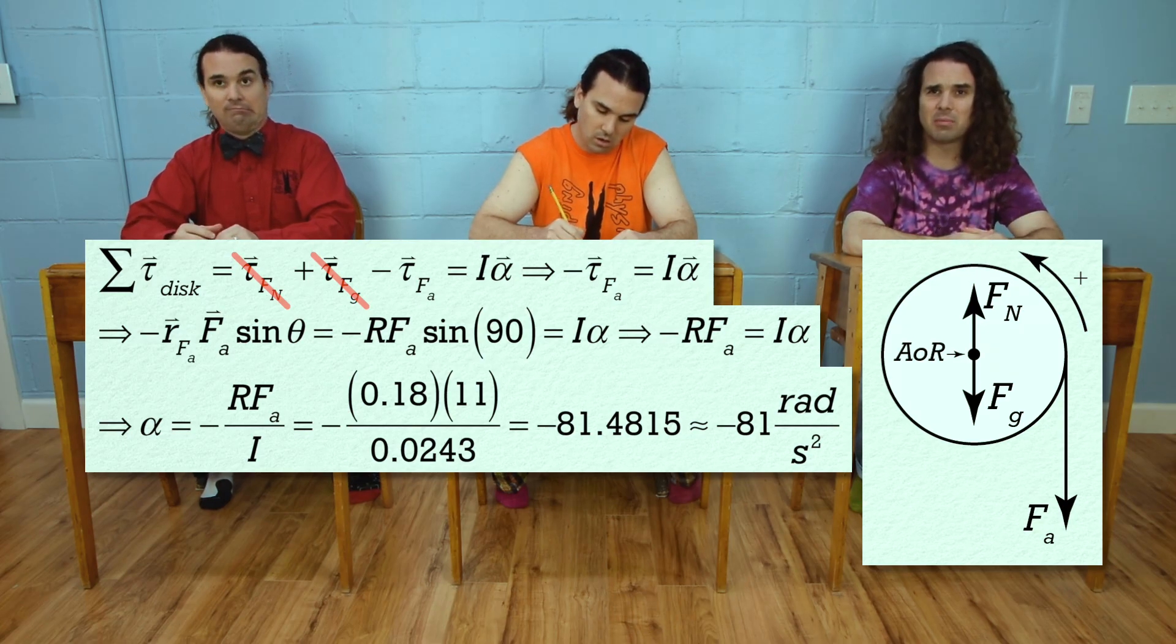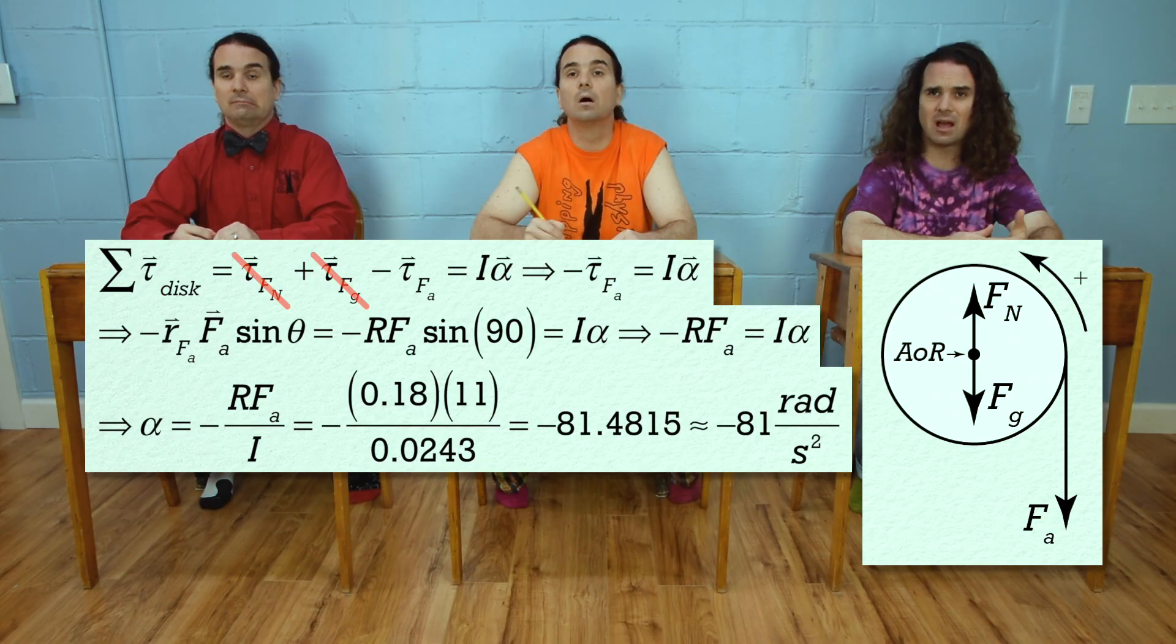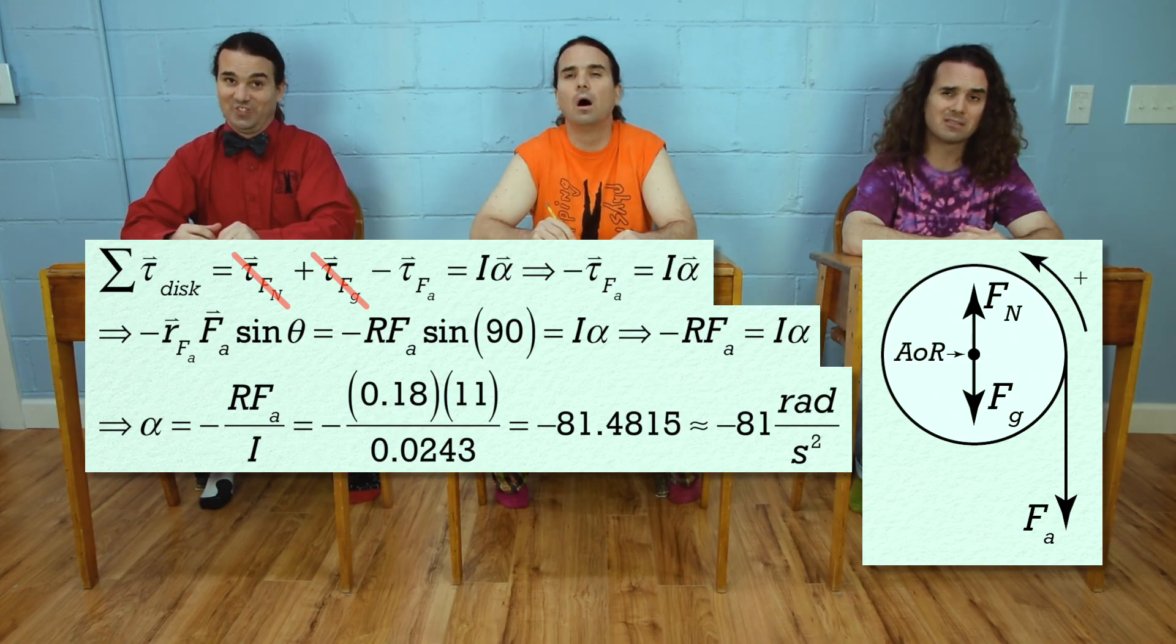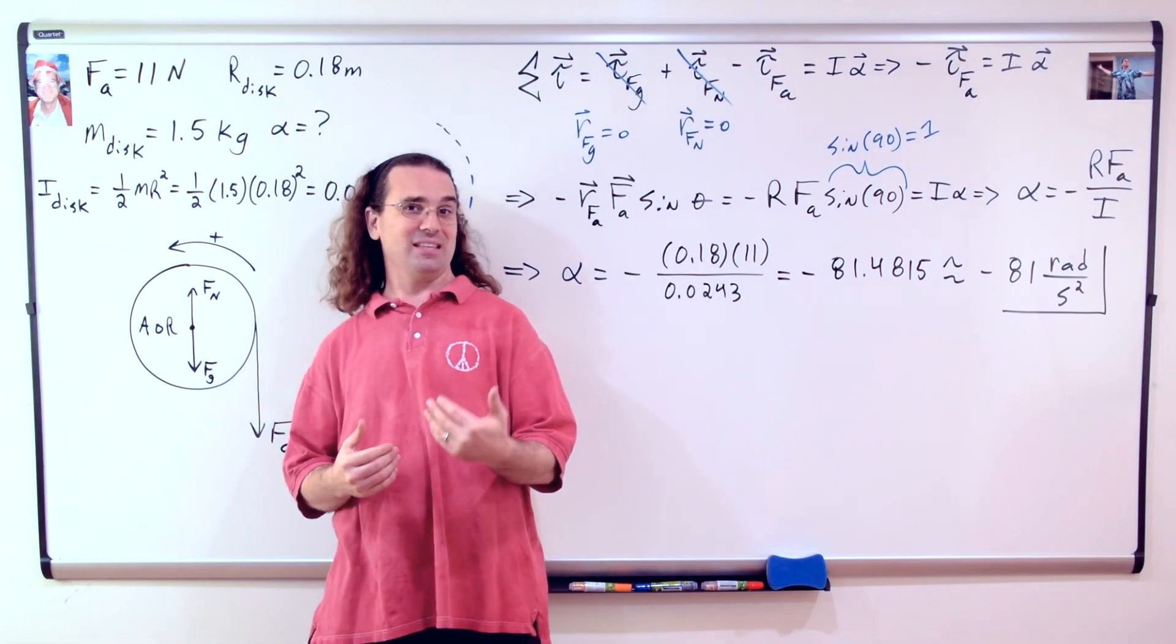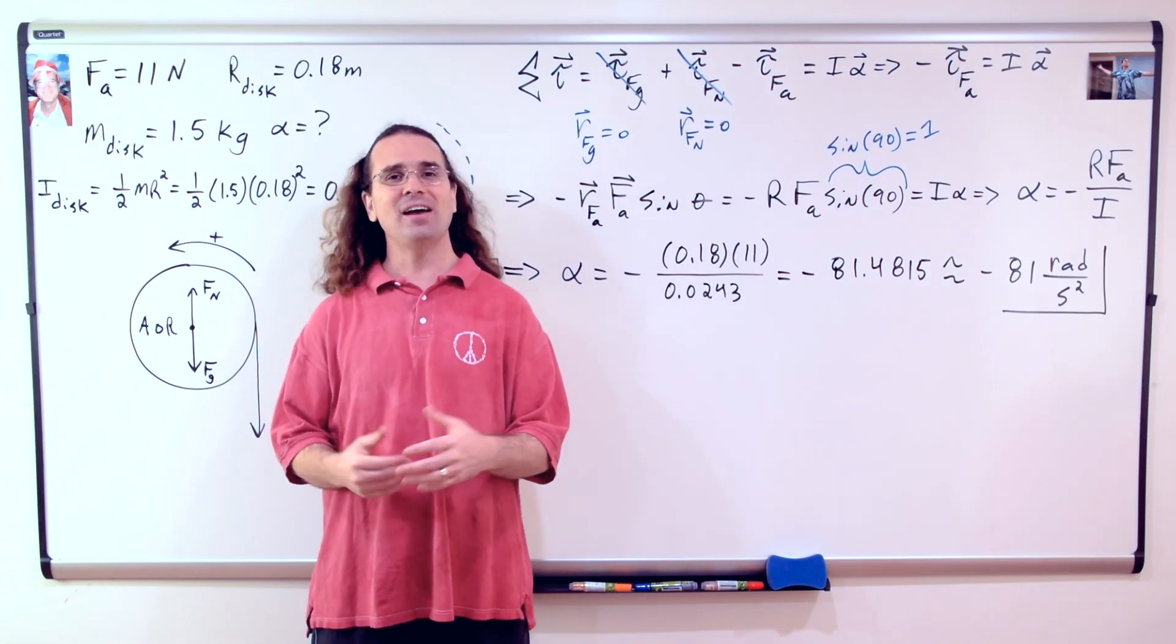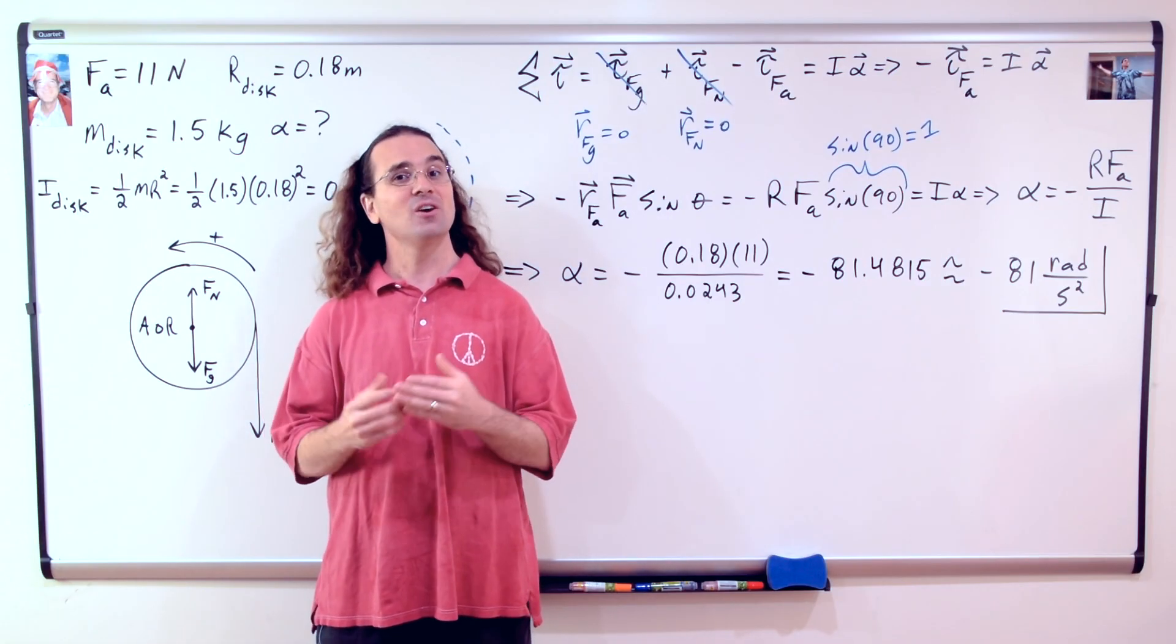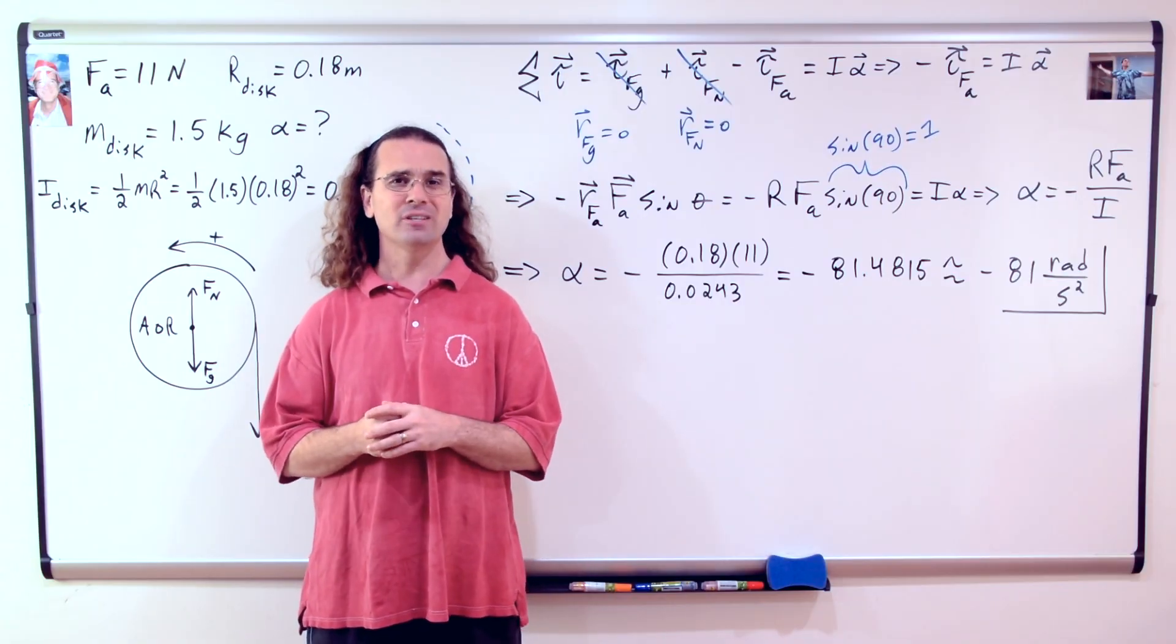I mean, it could have just as easily been positive if you had chosen clockwise or into the board as positive. Actually, I did not choose that direction, however, I think it's great that Billy did because now I get to remind you one more time that when using the rotational form of Newton's second law,